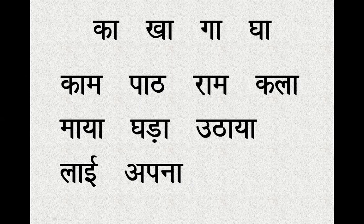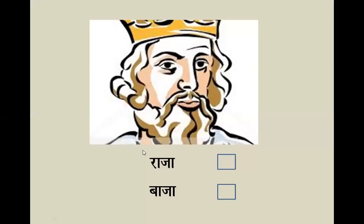In the next slide there will be pictures. You should choose the correct word for the picture. I'll tell the name of the picture and you should identify whether the first one or the second one is the correct word. Read and identify — Raja means King. Where is Raja — first one or second one? Identify correctly.